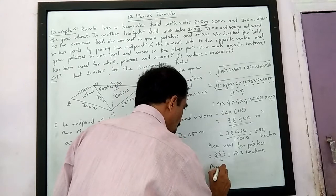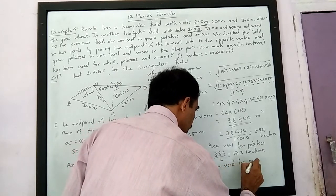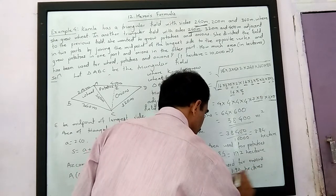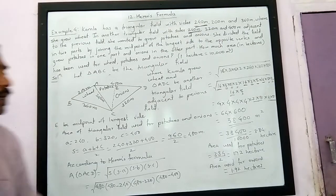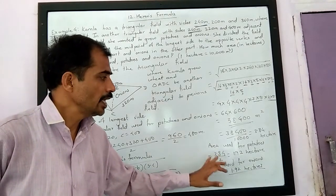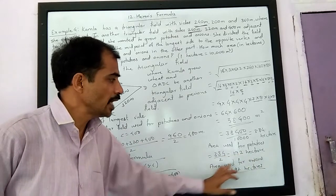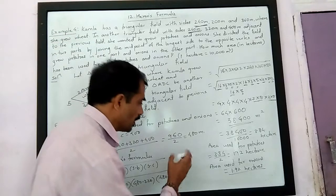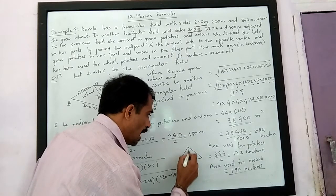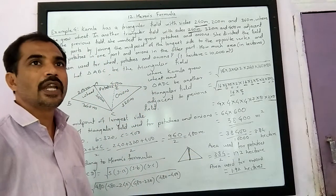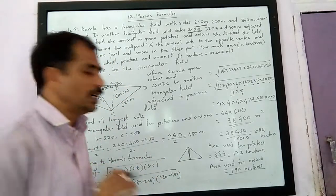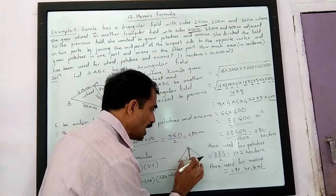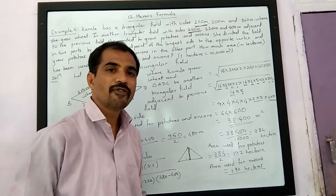Area used for onions is also equal to 1.92 hectares. So area used for potatoes is 1.92 hectares and area used for onions is 1.92 hectares. If in a triangle we join the midpoint, we are dividing the triangle into two triangles of equal areas, because area equals half times base times height — both triangles have equal height and the base is halved, so each triangle's area becomes half of the original.